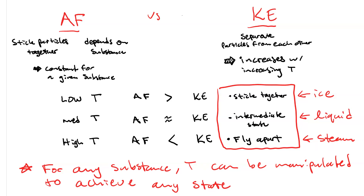So in the solid, the kinetic energy is lower than the attractive force. In the liquid, the attractive forces and the kinetic energy are about equal. And in the gas state, the temperature is high enough that the kinetic energy surpasses the attractive force and the particles fly apart.